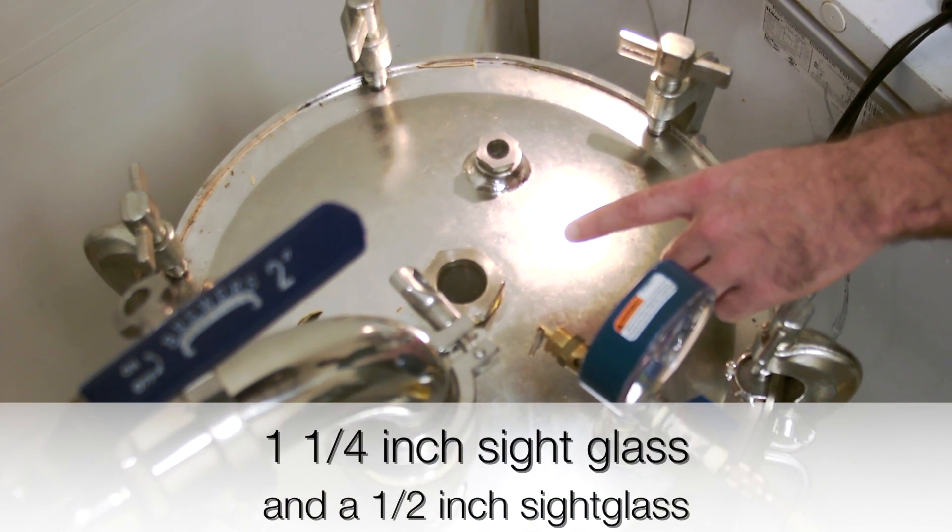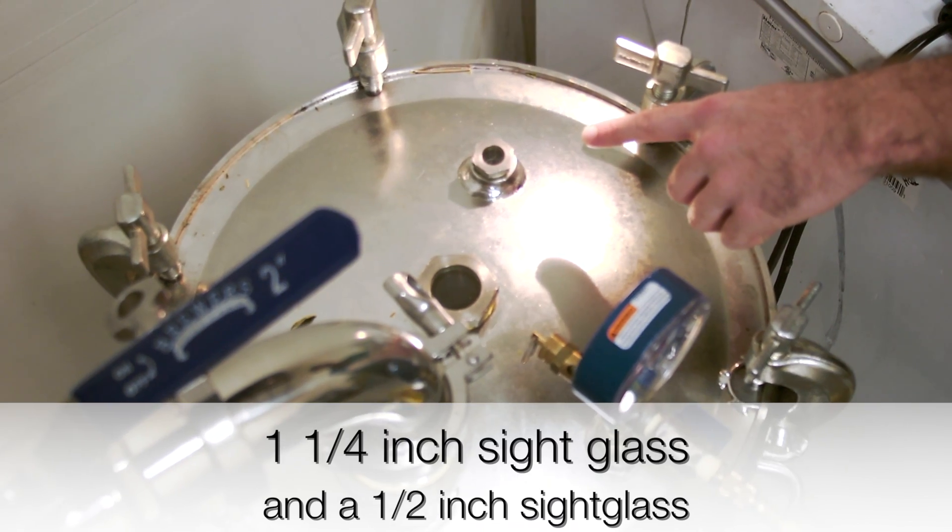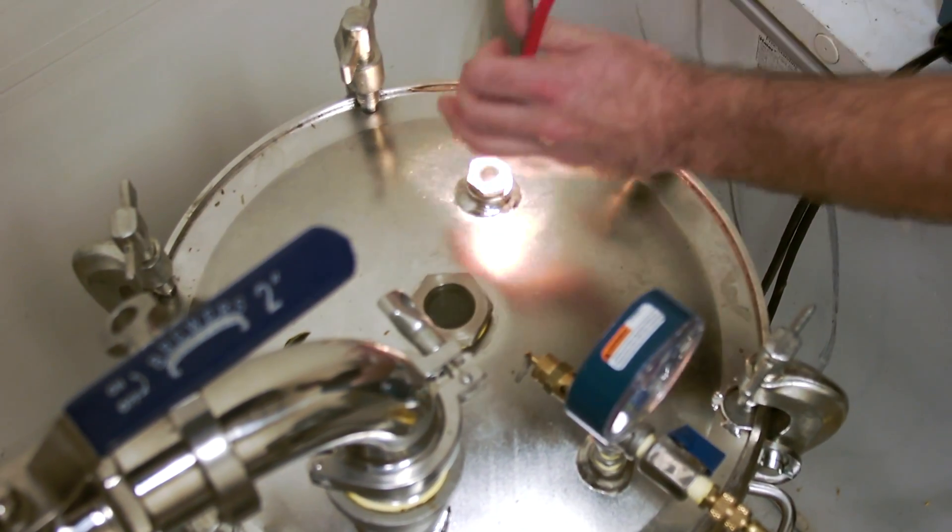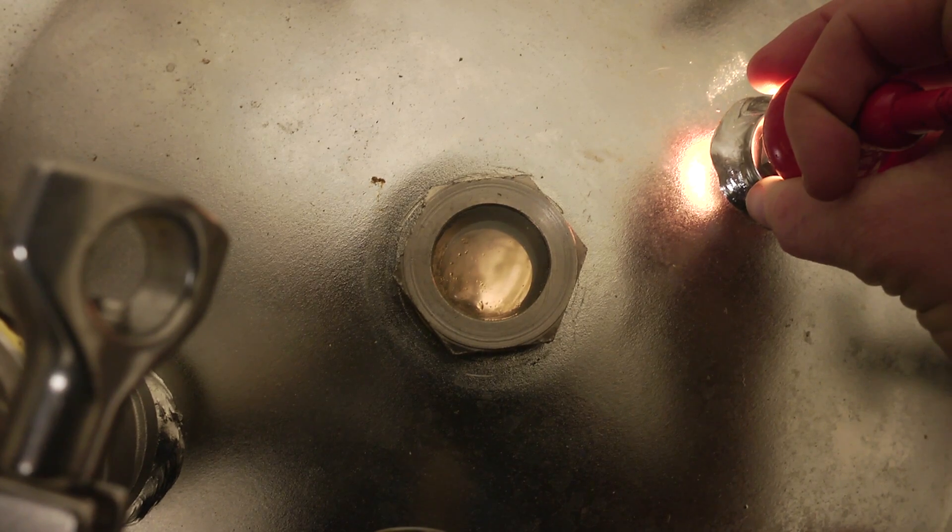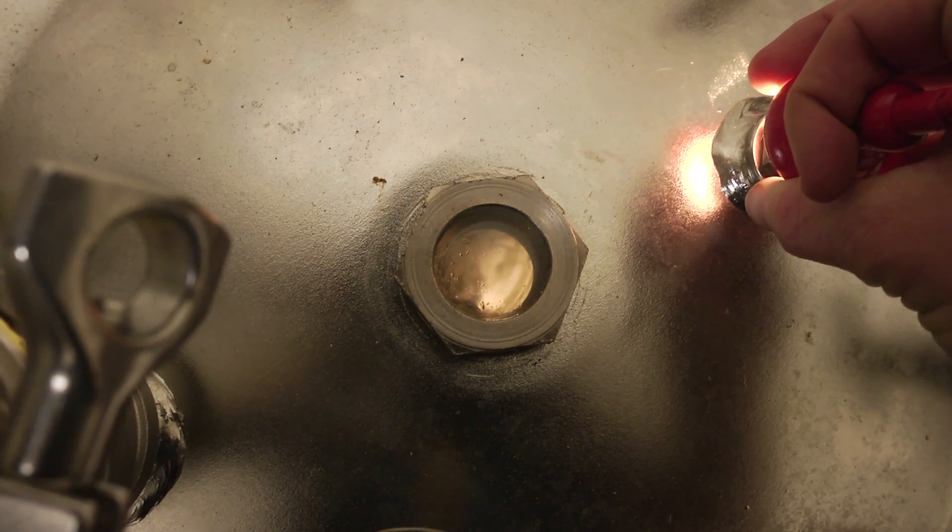You can see you have a quarter inch sight glass and a half inch sight glass. The half inch sight glass is used for a light. That way you can see the inside of the chamber and how much liquid solvent is left to recover.